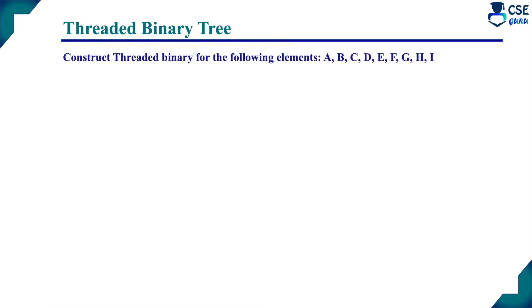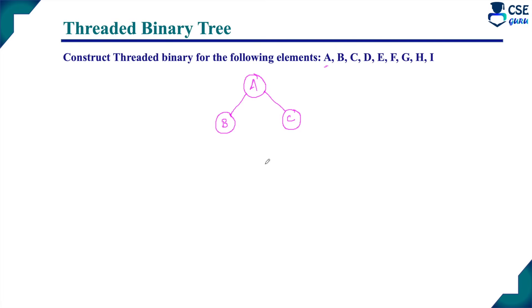Now for the given elements, we need to construct the threaded binary tree. Construction is like a normal binary tree: the first element is the root node A, B is the left child, C is the right child. A binary tree has at most two children — zero, one, or maximum two. Construction is done level-wise from left to right: level 0, 1, 2, 3.